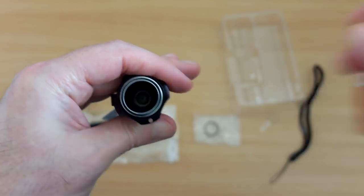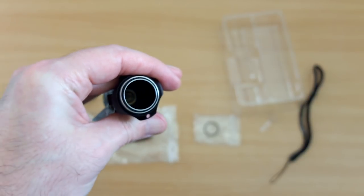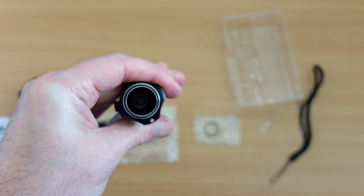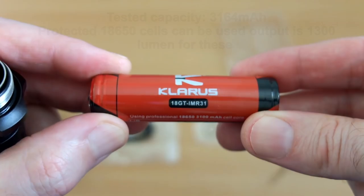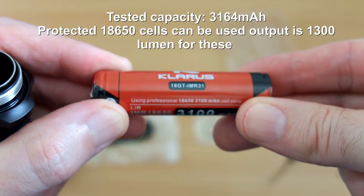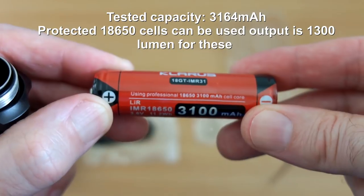Now the cell that this ships with is an unprotected one. You can see we have a spring there on both sides and this one in the cap.